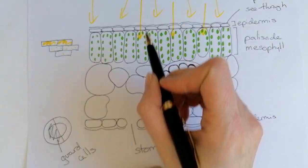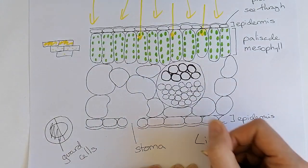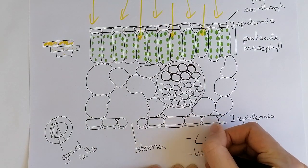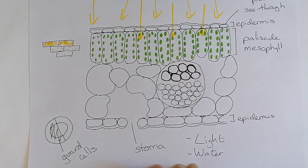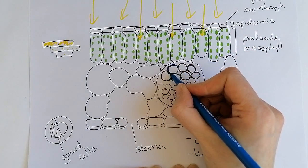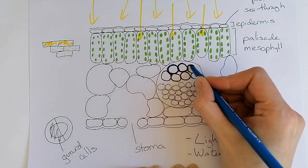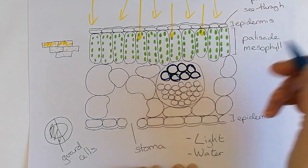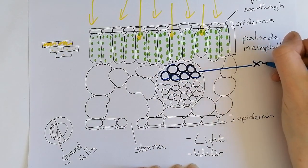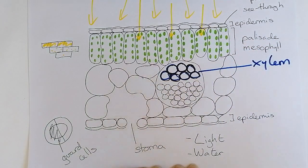Now the water comes through here. We have these vessels here which are our xylem vessels, and the xylem vessels transport water around the plant.